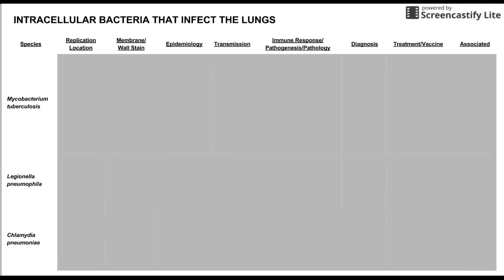Let's get started with MTB, Mycobacterium tuberculosis. MTB replicates inside the macrophages of the lungs. It's a facultative intracellular bacteria, meaning that it can grow in vitro, though it's usually much better at growing in natural macrophages. It has a generation time of a couple of days, and could take up to a week to grow a culture — much longer than E. coli. So we say it's a facultative intracellular bacteria.